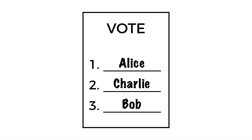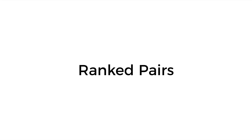So a voter, instead of just voting for Alice, for example, might instead indicate that Alice is their top choice, but their second choice is Charlie, and their third choice is Bob. The Tideman voting method, otherwise known as ranked pairs, determines the winner of an election by looking at every possible pair of candidates and determining who would have won a race if the election was just between those two candidates.